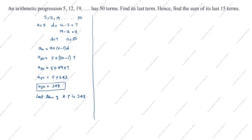Next we will see the second method. The first method and second method give the same last term, but the approach to finding the sum of its last 15 terms is different for the second method. So what we will do here is find the sum of its last 15 terms using a different formula.